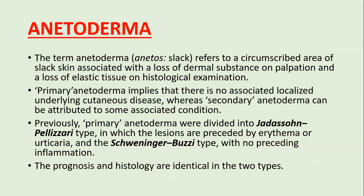Anetoderma derives from the Greek word 'anetos' meaning slack — it describes a circumscribed area of slack skin associated with loss of dermal substance on palpation and loss of elastic tissue on histological examination. Primary anetoderma implies no associated localized cutaneous disease, whereas secondary anetoderma is attributed to associated conditions. Primary anetoderma was previously divided into Jadassohn-Pellizzari syndrome (with preceding erythema) and Schweninger-Buzzi syndrome (no preceding inflammation), though prognosis and histology are identical in both.